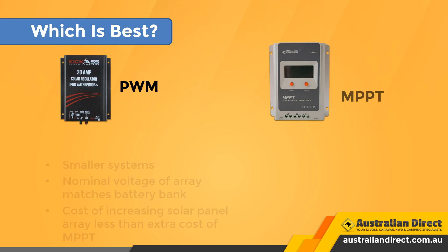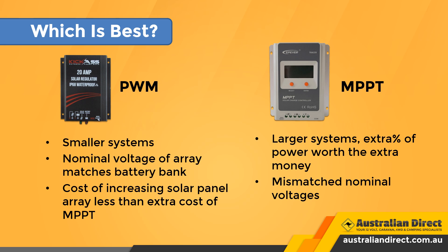So when should you use a PWM versus an MPPT charge controller? PWM works great on smaller systems where the nominal voltage of the panels matches the voltage of the battery bank. Remember that wiring panels in series increases the voltage — so if you have two 12-volt panels and a 24-volt battery system, you can wire the panels in series to make 24 volts. In most cases with a small system, the cost of increasing the panel size to get more power is less than the cost of going from PWM to MPPT. Going from a 100-watt panel to a 130-watt panel to get 30% more power will cost less than going from a PWM to an MPPT charge controller.